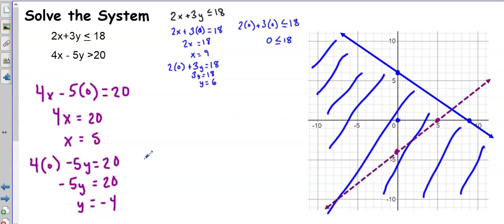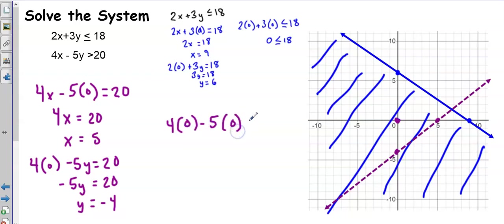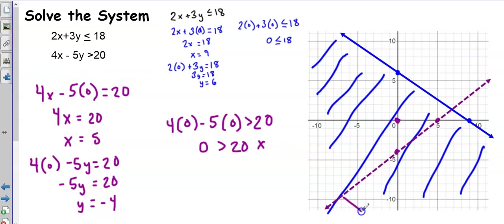To determine where to shade, I'll use test point (0, 0) again. Substituting 0 for x and 0 for y gives 0 > 20, which is not true — 0 is not greater than 20. So (0, 0) does not get shaded, meaning I shade the other side of the line.